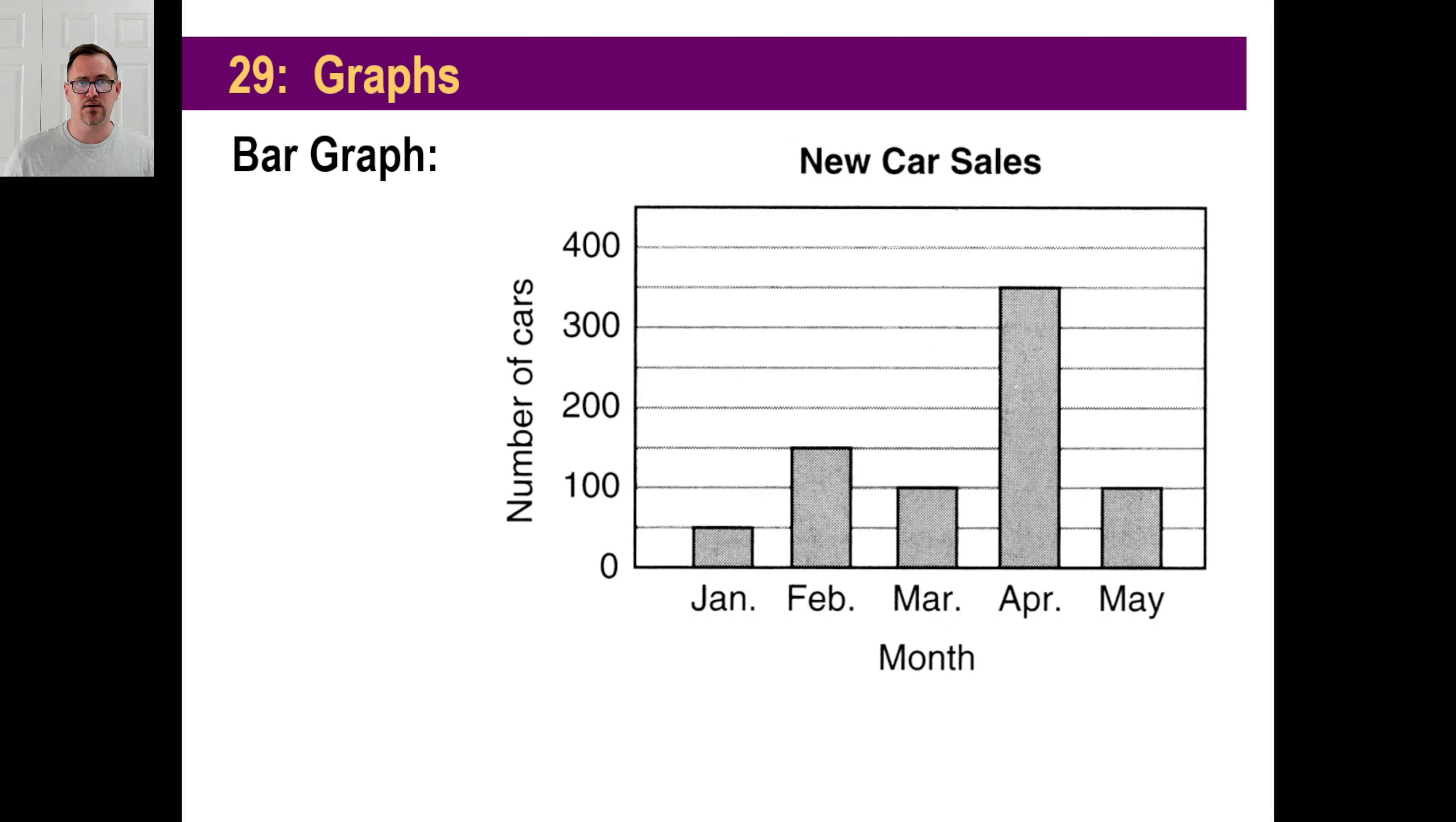Let's look at the first type of graph as a bar graph. So there's a bar graph of new car sales. They have a title there, new car sales. So we know what we're looking at, right? The number of cars is the label here, and the month is down here. So you're looking at this and you go, wait, how many is it? They just sold one car? What? One, two, three cars? The whole month?